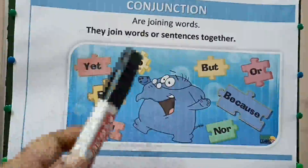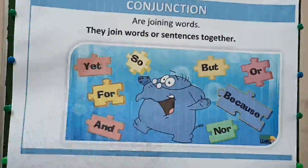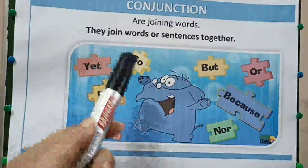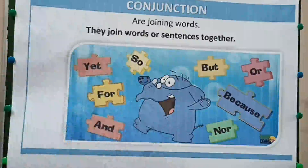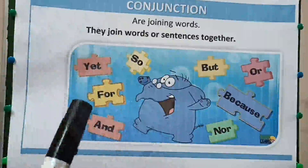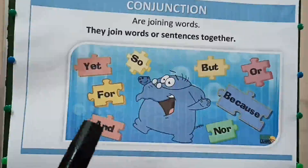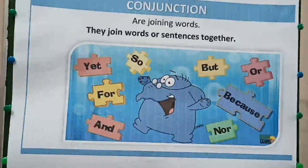So 'so' is used for showing the result of something. For example: he was very hungry, so he ate all the cake. In this way, 'so' is used.